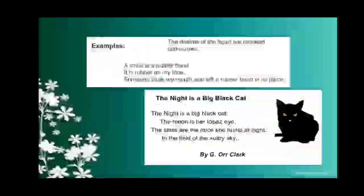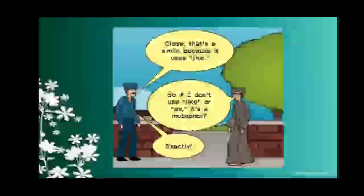Reading the poem: 'The night is a big black cat, the moon is her topaz eyes, the stars are the mice she hunts at night, in the field of the salty sky.' The metaphors here are: night compared to a big black cat, the moon compared to topaz eyes, and stars compared to mice. I hope this concept is now clear — let's sum up.